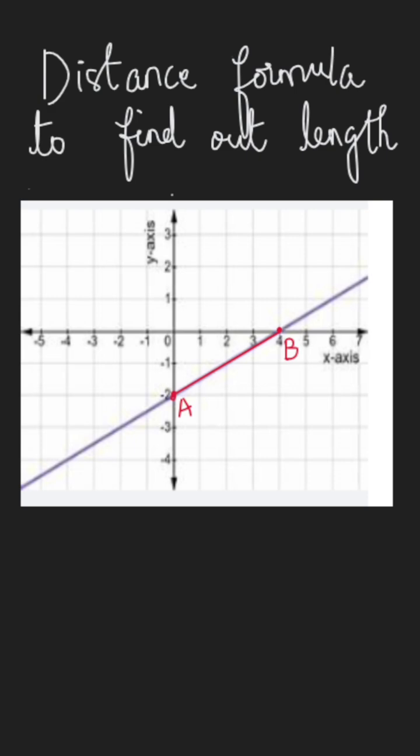let us understand how to use the distance formula to find out the length of a line on the coordinate plane. So here is a coordinate plane and the line given here, and we have to find the length of the line AB, the line segment AB.